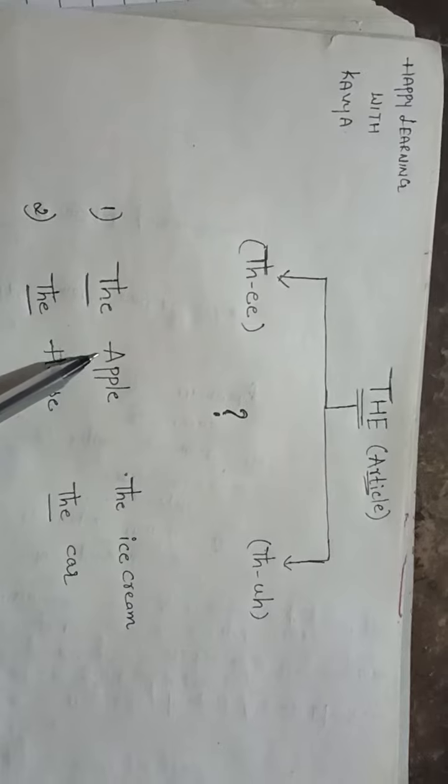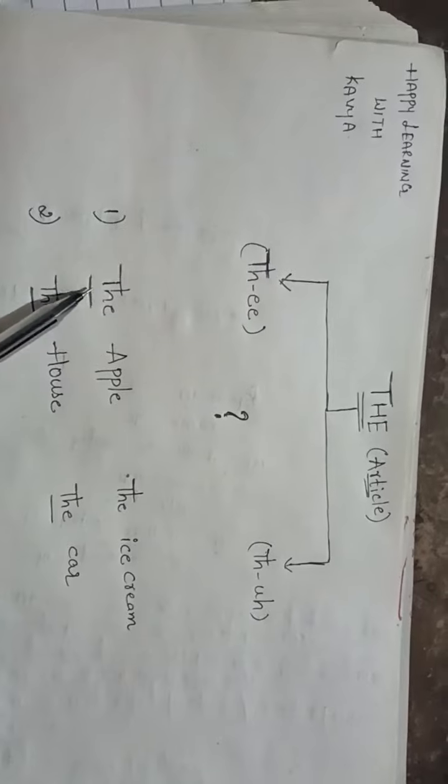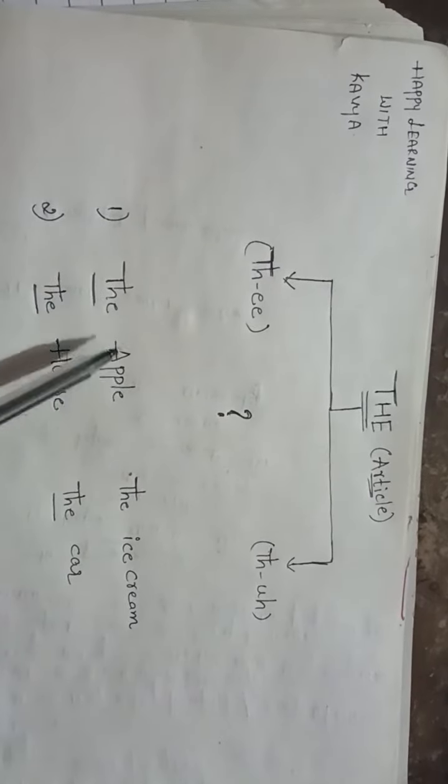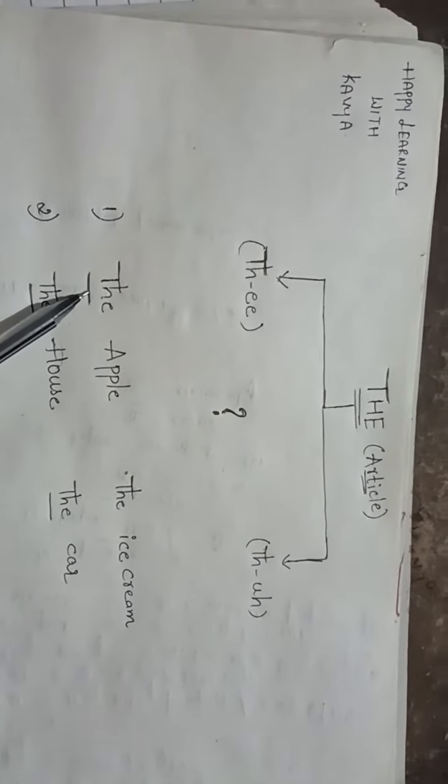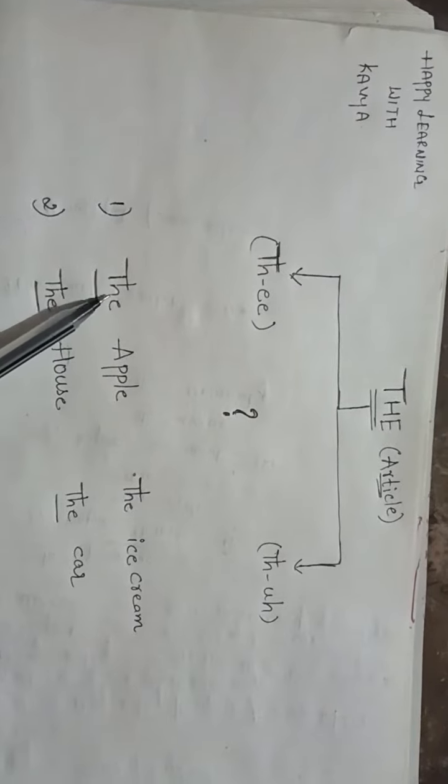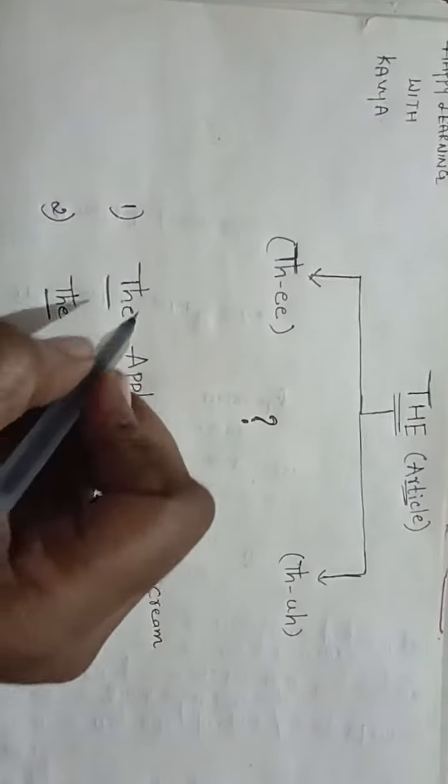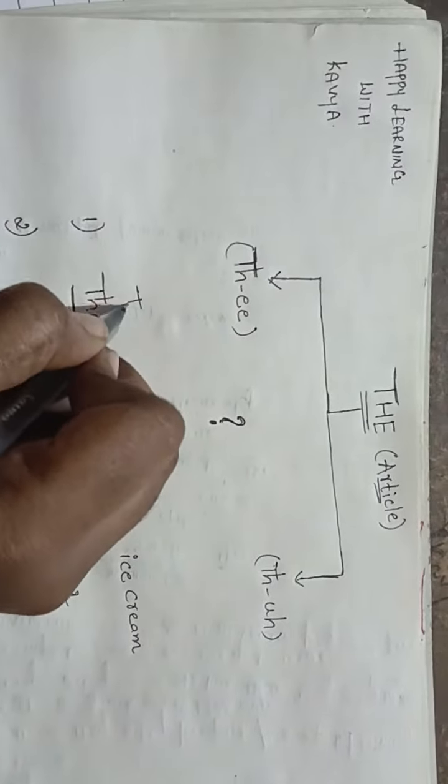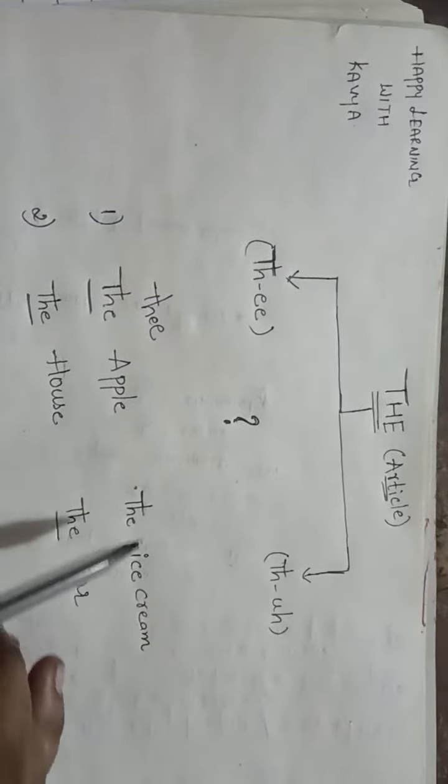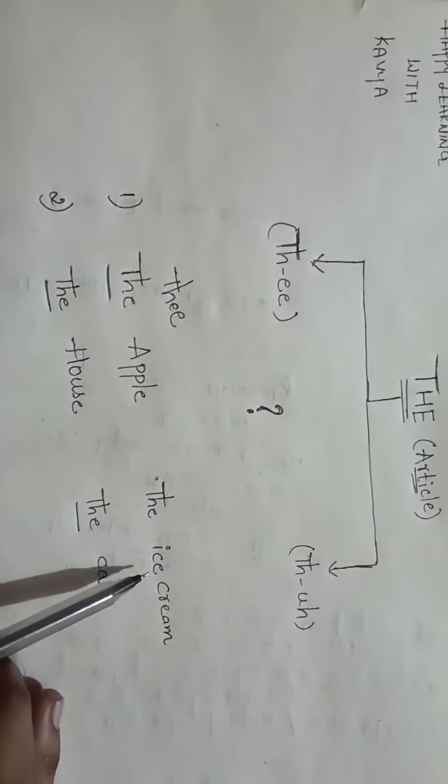If a word starts with a vowel, and if you write T-H-E before that vowel, then you have to pronounce this T-H-E as the long 'thee': thee apple, thee ice cream. See here, an ice cream, I is a vowel.